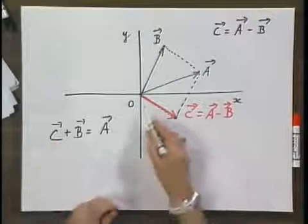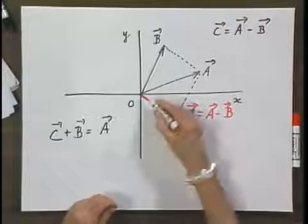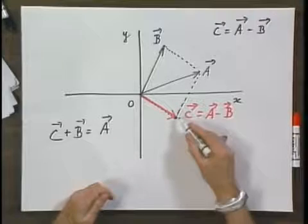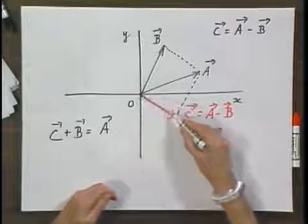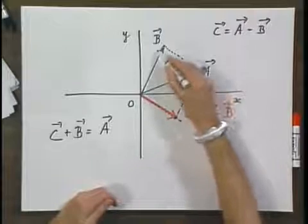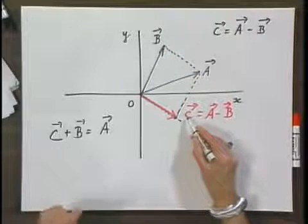Well, you see immediately that if I add this vector to this vector, following the rules of adding vectors, making a parallelogram, that this vector A is the sum of B and C. That's one way of doing it.